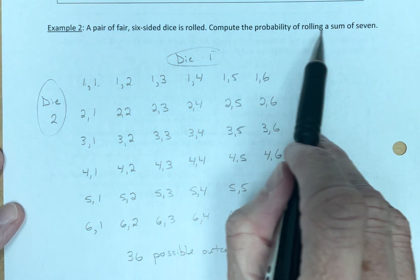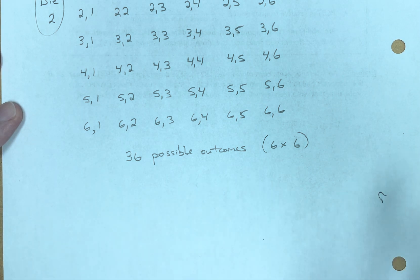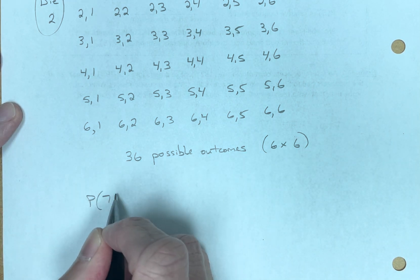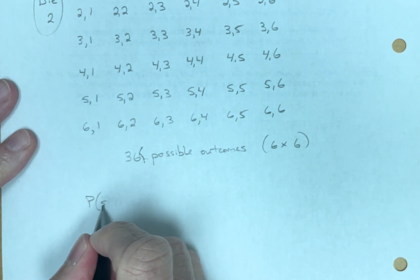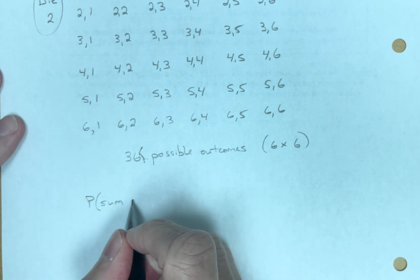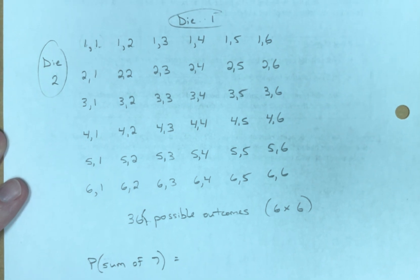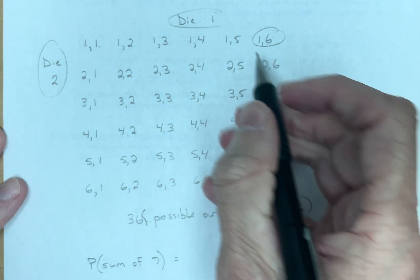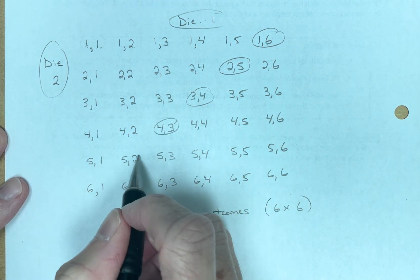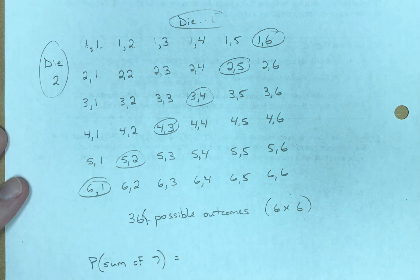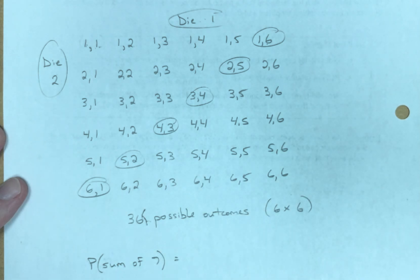Compute the probability of rolling a sum of seven. What is the probability of rolling a sum of seven? How many of these outcomes give me a sum of seven? One plus six, two plus five, three plus four, four plus three, five plus two, six plus one. So one, two, three, four, five, six give me a sum of seven.